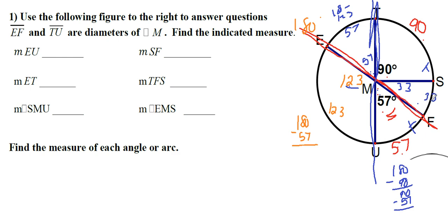Now I can pay attention to what I need. So the first question says, what's EU? Well, now that I've taken the time to already fill out my chart, I can say, oh, here's EU. 123. All right, it says, what's SF? Well, I filled out my chart at the start of the problem. SF is 33.